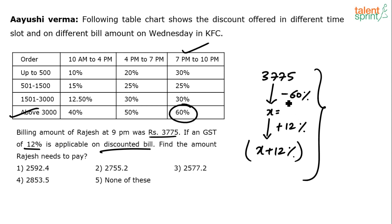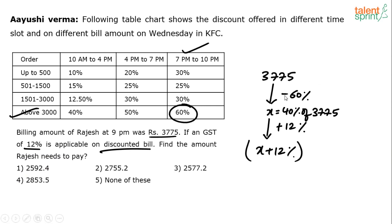Reducing by 60% means taking 40% of 3775. 40% of 3000 is 1200, 40% of 700 is 280, giving 1480. 40% of 75 is 30. So X = 1480 + 30 = 1510. Now add 12% GST on 1510.